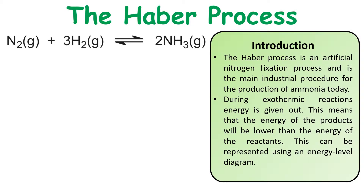The Haber process is an artificial nitrogen fixation process and is the main industrial procedure for the production of ammonia.